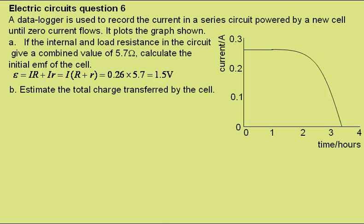Part B. Estimate the total charge transferred by the cell. Well, current is equal to transfer of charge divided by time taken, and so the charge transferred is equal to the current multiplied by the time taken.